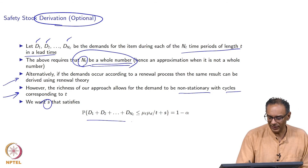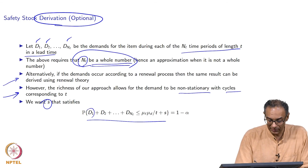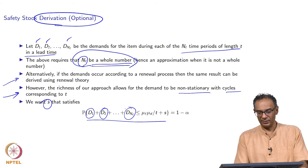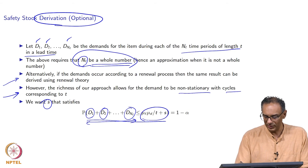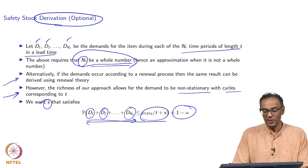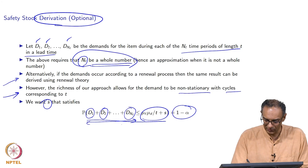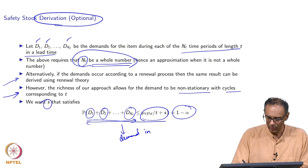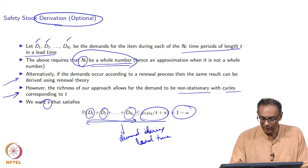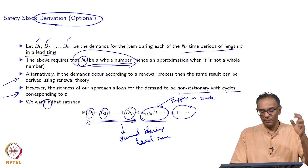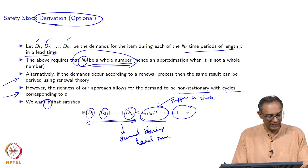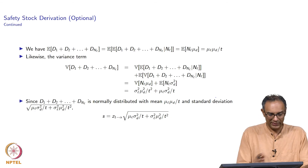We want an S (safety stock level) that satisfies: the probability that total demand during the lead time (d_1 + d_2 + ... + d_{n_l}) is less than or equal to S must be at least 1 - alpha. In other words, the stock on hand must exceed lead-time demand with probability 1 - alpha.